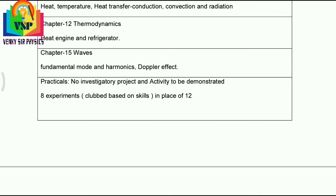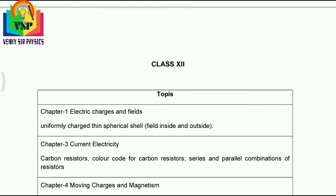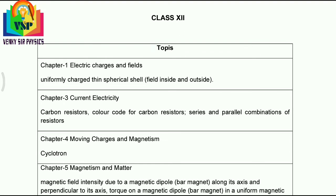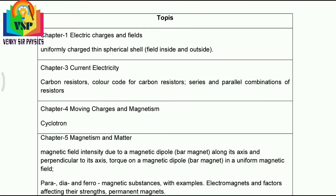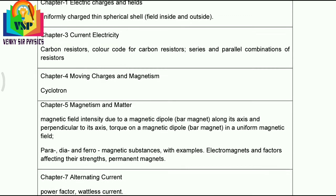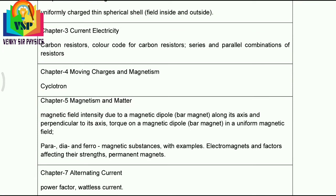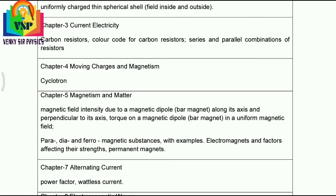Coming to Plus 2 — very very important. Deleted concepts and topics: Chapter 1, Electric Charges and Fields — uniformly charged thin spherical shell, field inside and outside. Chapter 3, Electric Current — carbon resistor colour code, series and parallel combination of resistors. Chapter 4, Moving Charges and Magnetism — Cyclotron. Note: Cyclotron is a very very important topic.